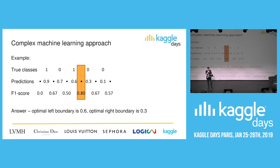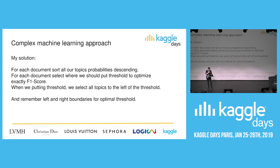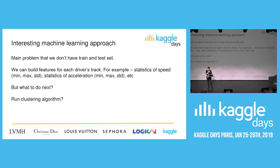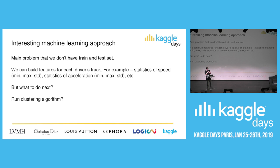Question: In the AXA driver telematics competition, what were the best features for you? Answer: The best features were a lot of statistics of speed, derivatives of speed, derivatives of derivatives of speed, etc. Statistics here means not just minimum and maximum, but the 0th percentile, 10th percentile, 20th percentile — around 400 different statistics in total. These really showed exactly the driver behavior.